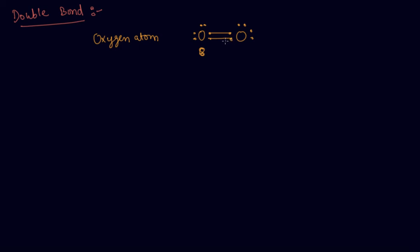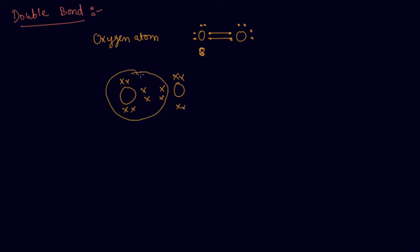Together they constitute a double bond. This is the structure of the oxygen molecule O₂, and this is how a double bond is formed — a double bond between two oxygen atoms.